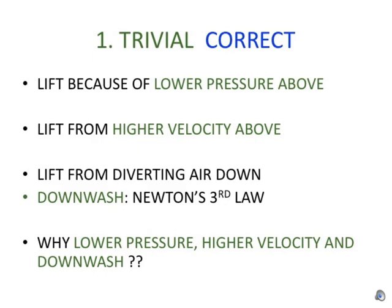We start with some well-known trivial and correct theories. A wing generates lift because the pressure is lower on the upper surface than on the lower surface of the wing. Lift is generated by higher velocity above than below the wing. Lift is generated as a reaction by Newton's third law from diverting air downwards, in so-called downwash. These statements are correct but trivial, as long as it is not explained why the pressure is lower and the velocity higher, or why a wing generates downwash.